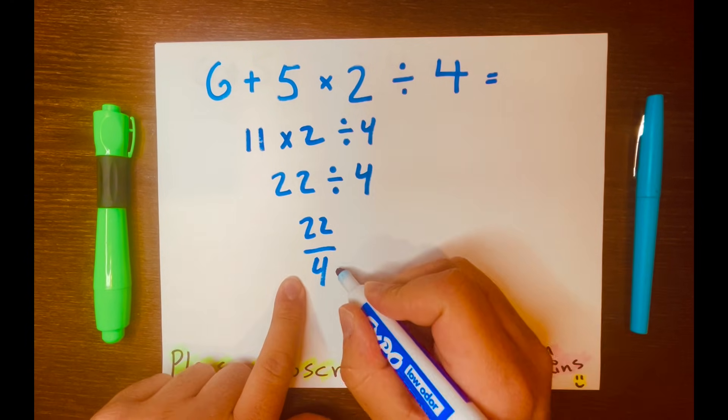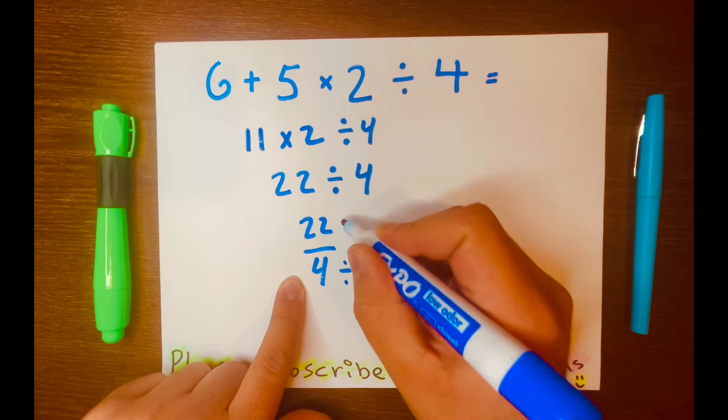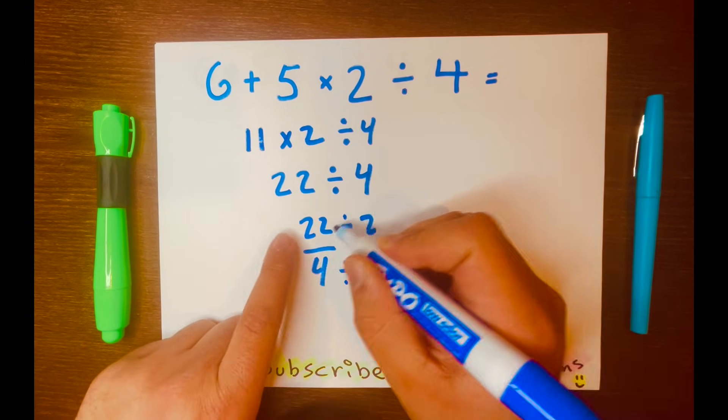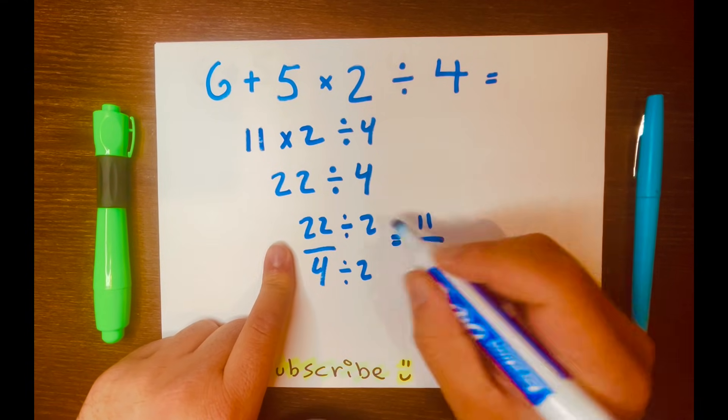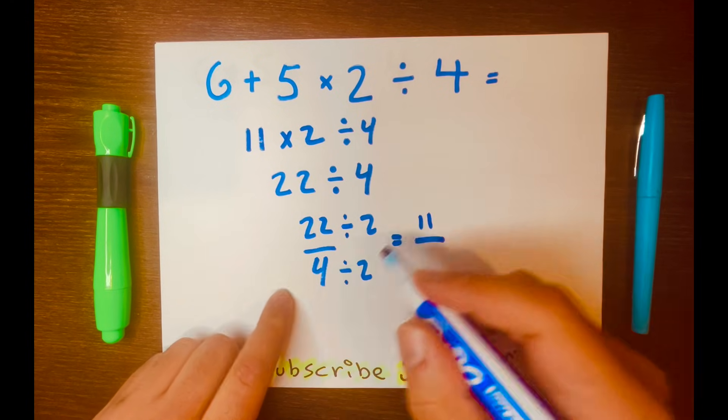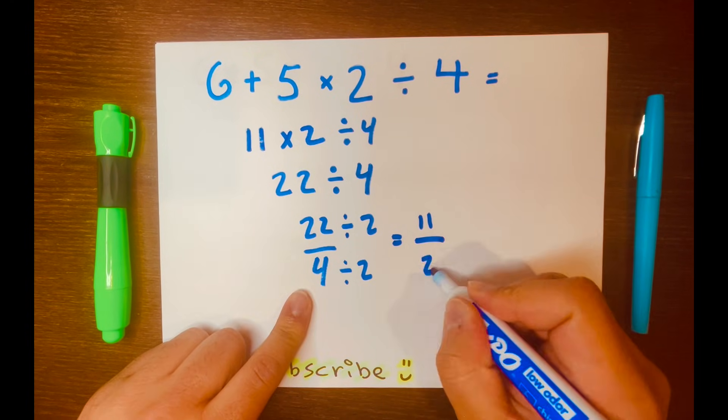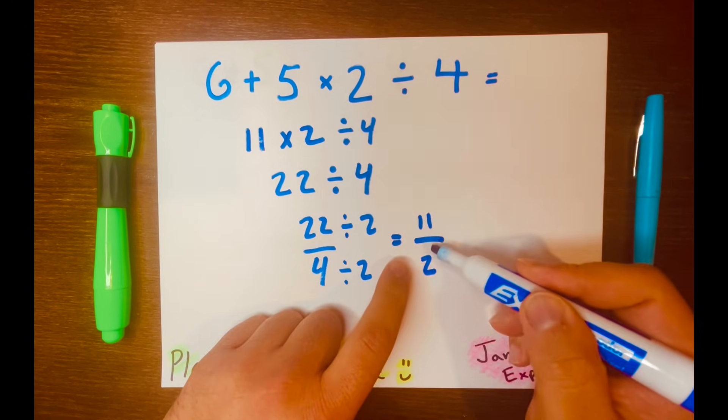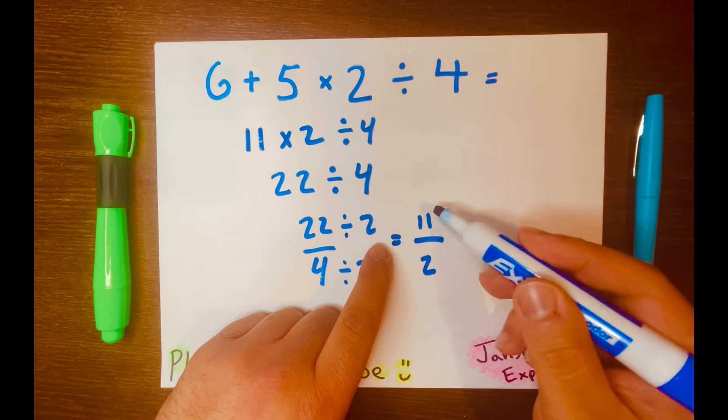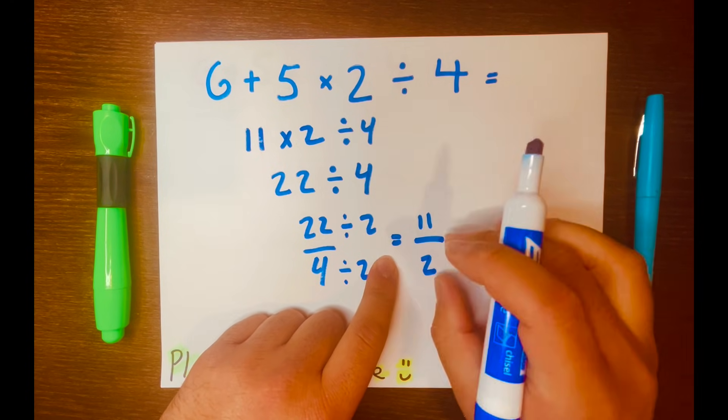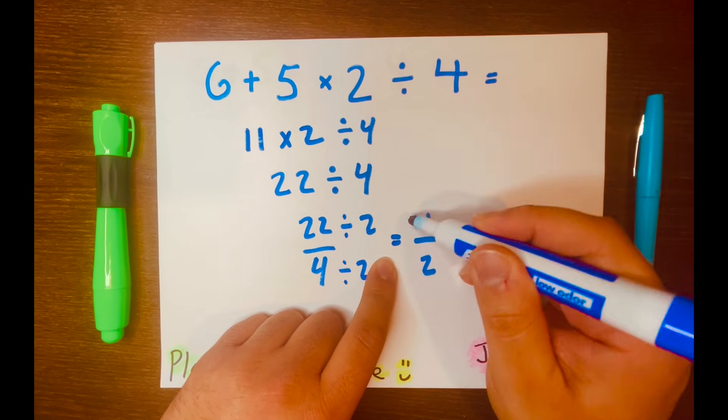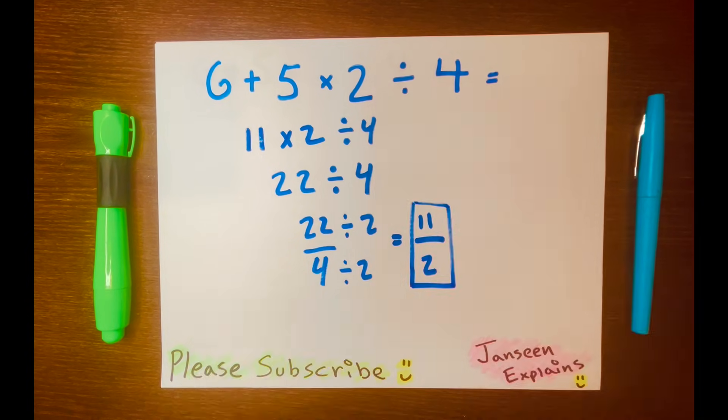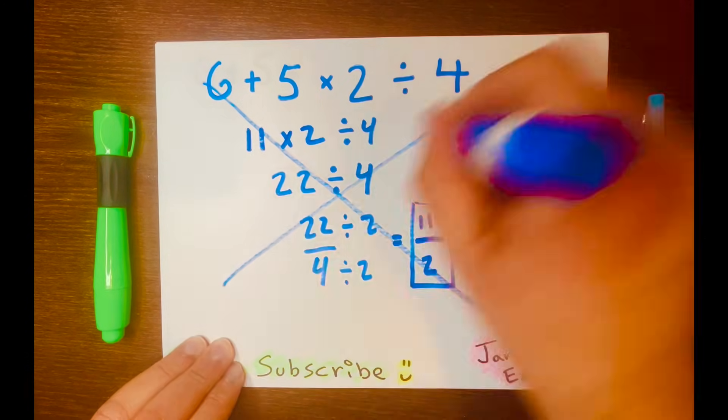So they'll write it like this: 22 over 4. Now they're looking at this, and then they'll break it down to the simplest form. They divide by 2. Half of 22 is 11, and half of 4 is 2. You cannot simplify this improper fraction to its lowest term, so this is the answer. And this is incorrect.